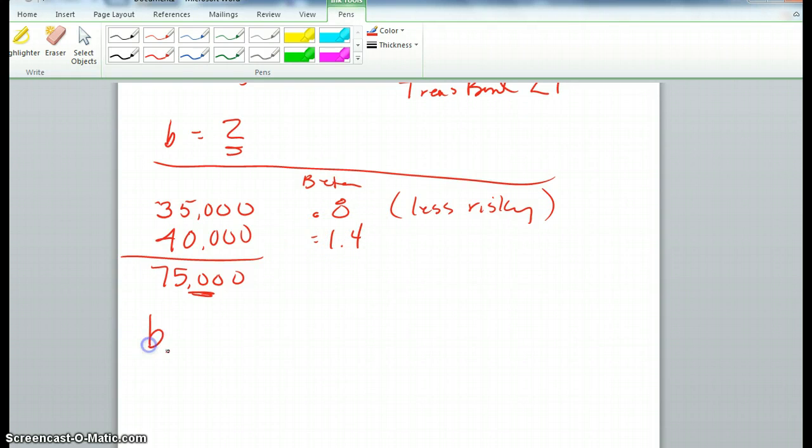And we will indicate that by putting, using B with a subscript of P. So the beta of the portfolio, I'll write it out. And we're just going to do that by taking the portion of this $35,000 investment from our whole investment.